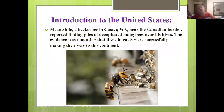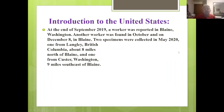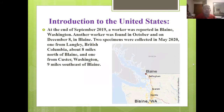A beekeeper in Custer, Washington, near the Canadian border, reported finding piles of decapitated honeybees near his hives. At the end of September 2019, a worker was reported in Blaine, Washington. Another worker was found in October and on December 8th in Blaine. Two specimens were collected in May 2020 — one from Langley, British Columbia, about eight miles north of Blaine, and one from Custer, Washington, nine miles southeast of Blaine.